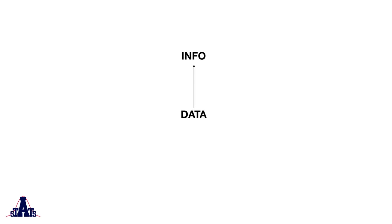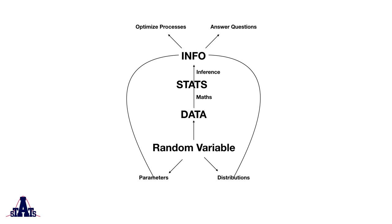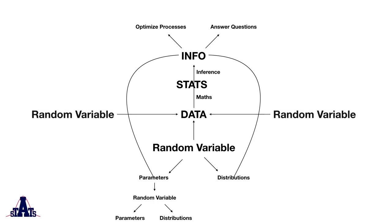We've got our data, we've got our information, and we want to turn data into information. Stats is a combination of mathematical processes as well as logical inferences, and we use this information to answer questions or to optimize processes. All data comes from random variables, and random variables have two things: parameters and distributions. The stats we're doing is trying to acquire information about these parameters and distributions. However, sometimes parameters are unknown and behave a little like a random variable — in which case they also have their own parameters and distribution. Sometimes we can have multiple random variables contributing to the data, and we need to know how these are connected — in other words, what is the correlation between them.